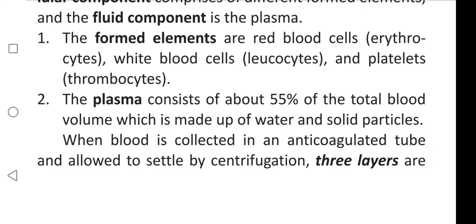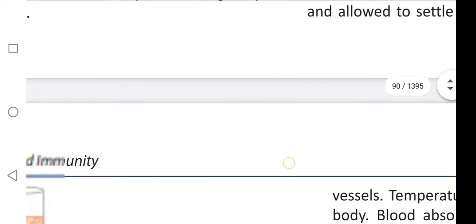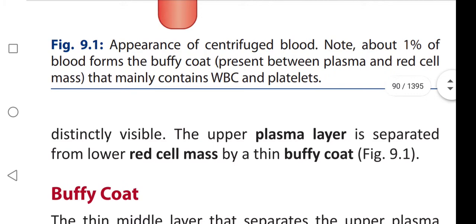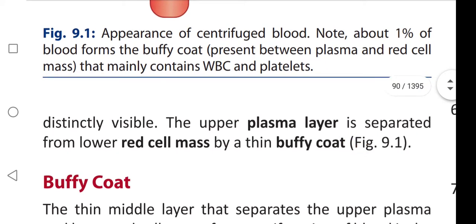Plasma consists of about 55 percent of the total blood volume, which is made up of water and solid particles. When blood is collected in an anticoagulated tube and allowed to settle by centrifugation, three layers become distinctly visible.